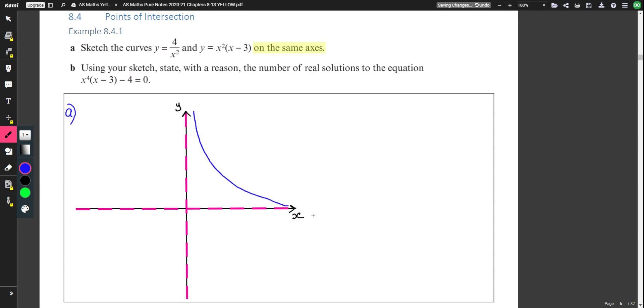Make sure it does not cross the x-axis or the y-axis and try and make it look almost as symmetrical as it can. And then label your graph 4 over x squared. You should always label your graphs when you're doing two graphs on the same axis.